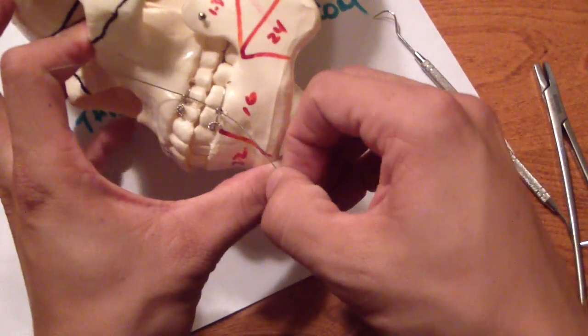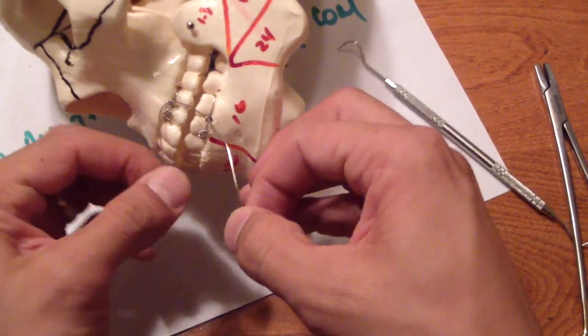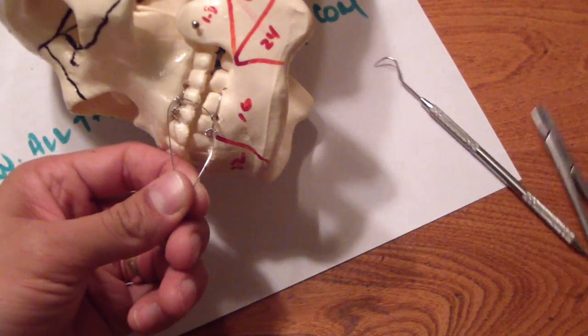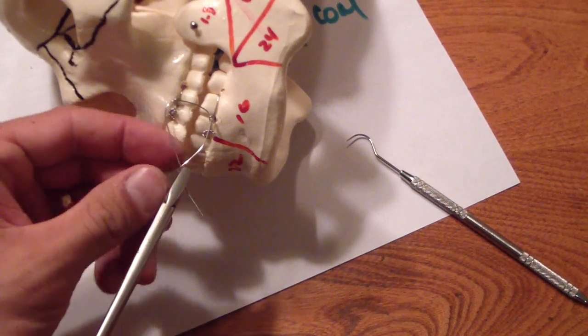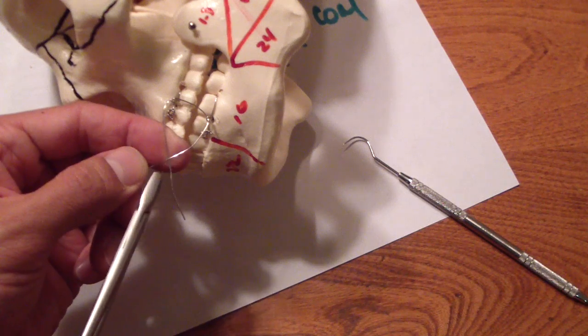Alright, there we go. And then we're going to just twist it. So again, we're going to start a little bit out and then pull the wire taut as we twist.